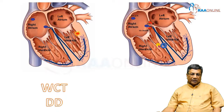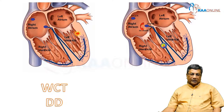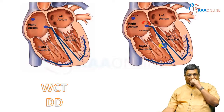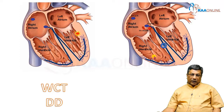Another important cause of wide QRS complex tachycardia is that although a supraventricular tachycardia is occurring — such as atrial tachycardia, AVNRT, or AVRT — if the patient already has a pre-existing bundle branch block, the SVT beats will also be conducted through one bundle and reach the other ventricle through the muscle. So even though it is supraventricular tachycardia, in the presence of a pre-existing bundle branch block, it will produce wide QRS complex tachycardia.